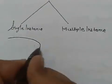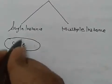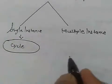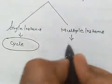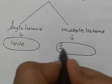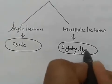In a single instance, when a cycle is formed, it means we have a deadlock and in the multiple instances, we will use the safety algorithm.